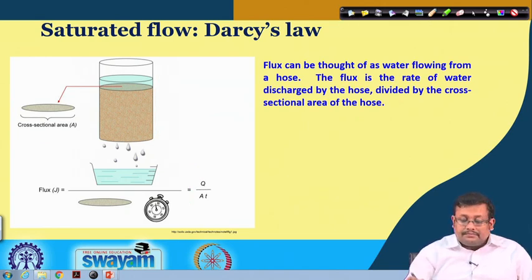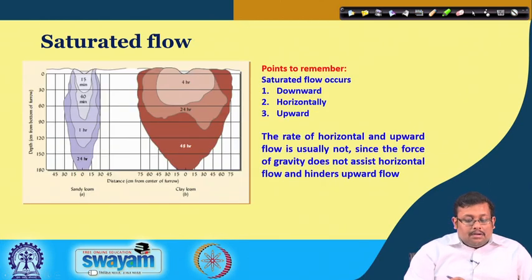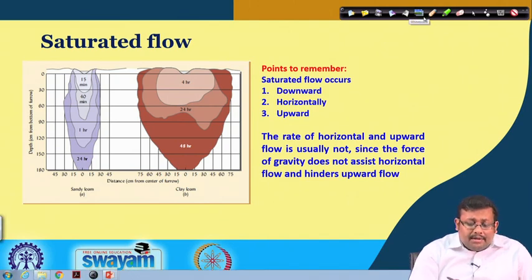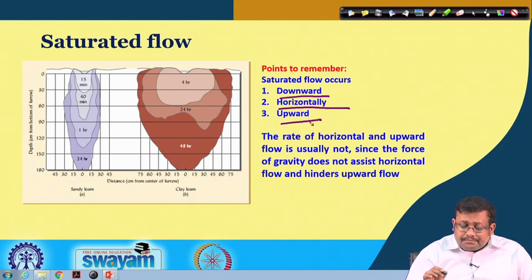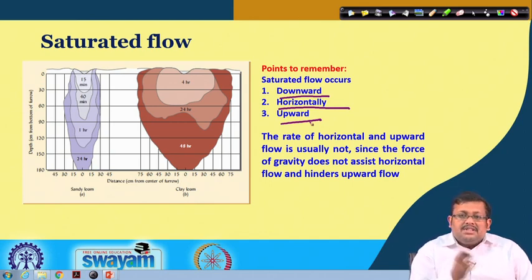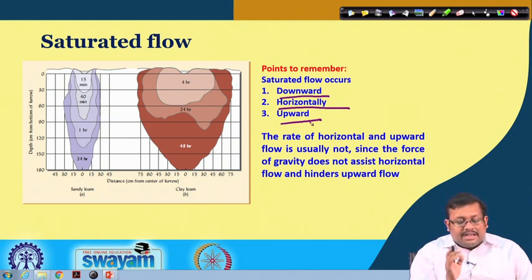In saturated flow, water can move downward, horizontally, and upward. However, the rate of horizontal and upward flow is not the same as downward flow because gravity does not assist horizontal movement and actually hinders upward flow.